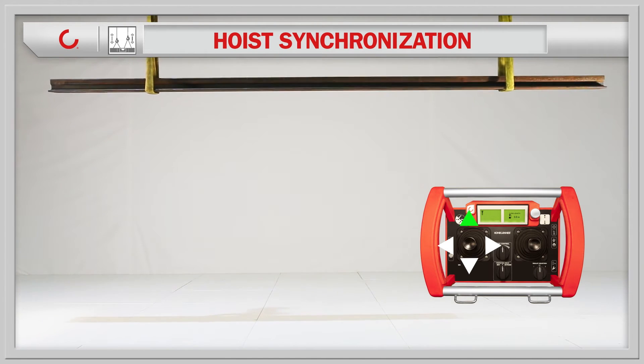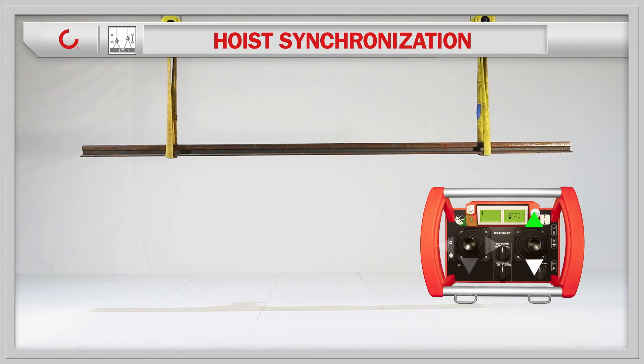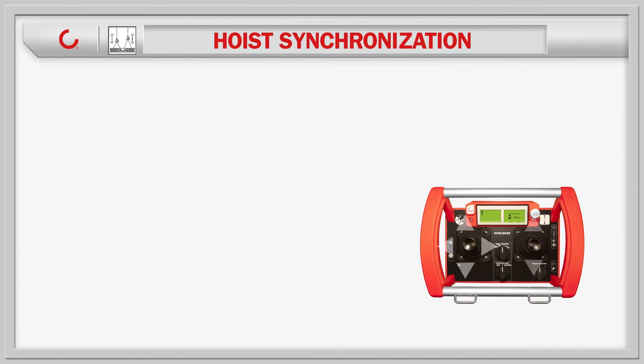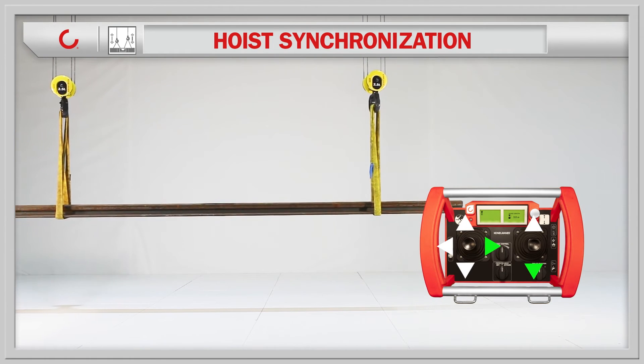Hoisting synchronization works even when the load is not equal on each hook. This feature is based on the known position of both hooks. The common hoisting speed of the hooks is limited according to the slower hoist.